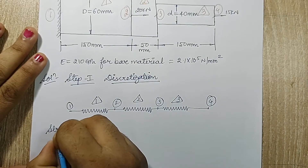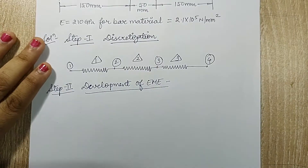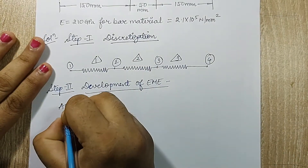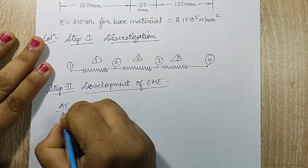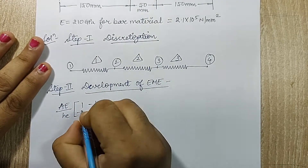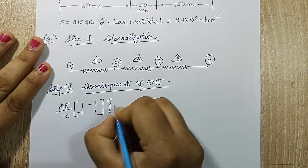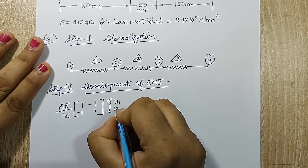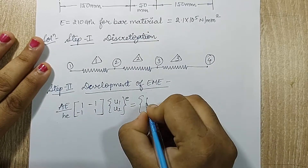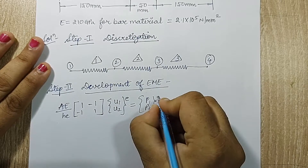Next I will go for step 2, that is development of the element matrix equation (EME). As in the previous question, the EME is (AE/h) × [1 -1; -1 1] × {u1; u2}^e = {p1; p2}^e.